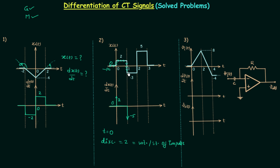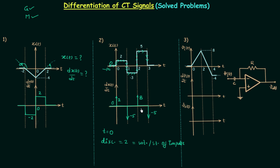From one to two we again have a constant value equal to minus three, so the slope is zero. When t is equal to two, we have a discontinuity — a rising edge — and the net value is equal to eight, going from minus three to five. The sign of the strength is positive because it is a rising edge, so we have an impulse with weight plus eight at t equal to two. When t is equal to three there is another discontinuity, giving an impulse with strength minus five because it is a falling edge.